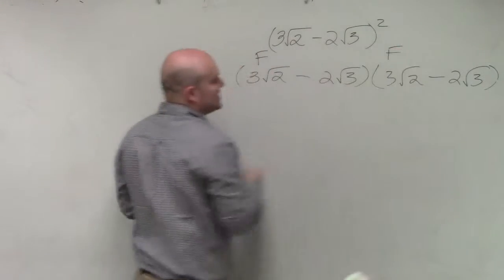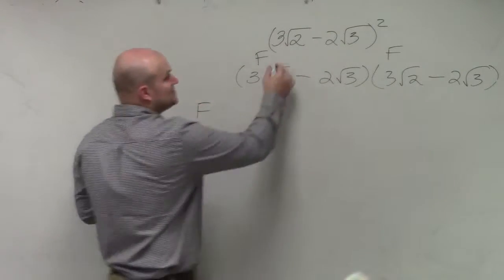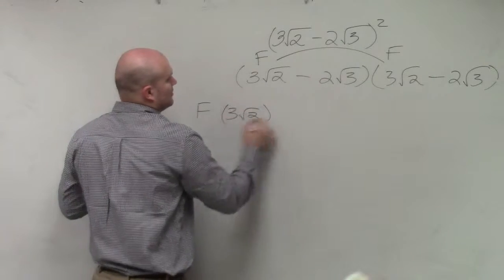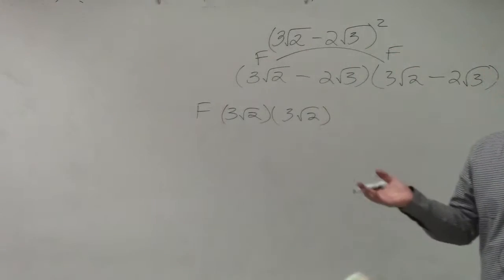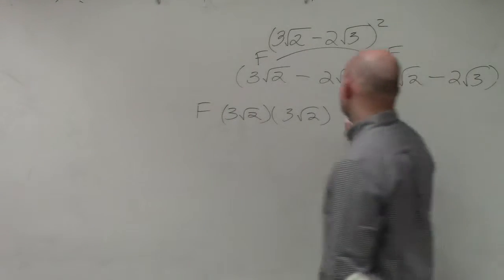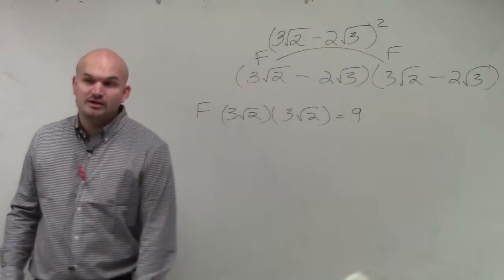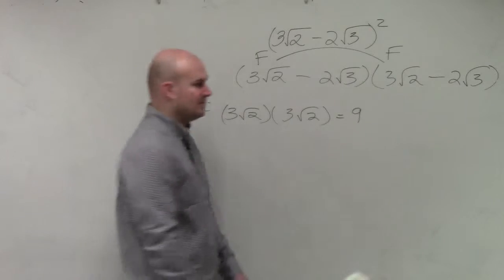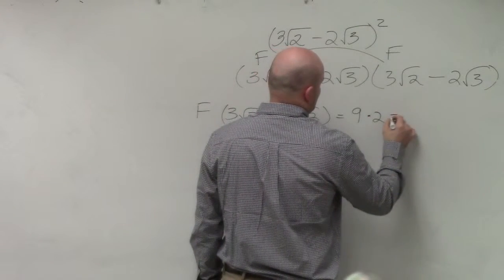Remember, FOIL basically stands for first. So the first terms in each one, I need to multiply those. So I multiply 3 square root of 2 times 3 square root of 2. If I remember my multiplying, 3 times 3 is going to be 9, and then that's going to be the square root of 2 squared, right? Square root of 2 squared, which is 2, which equals 18.